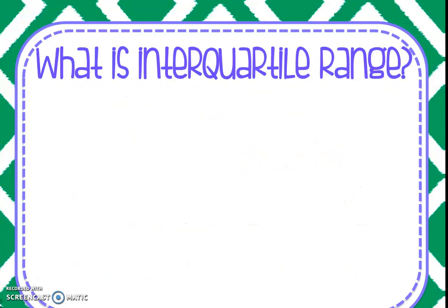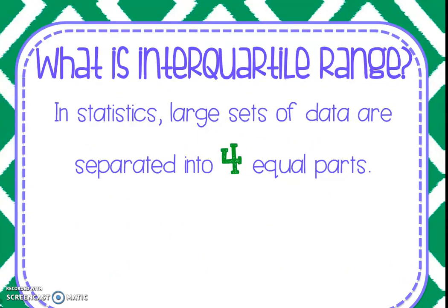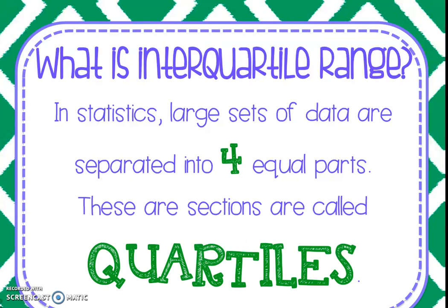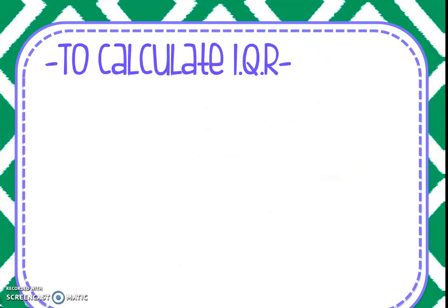So first things first, what is interquartile range? In statistics, large sets of data are separated into four equal parts and we call those quartiles. Quart, the prefix, tells us that's going to be four and we break the data into quartiles so that we can see different percentages of the data. So those four sections are called quartiles.